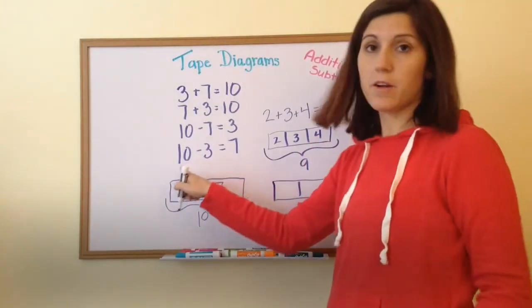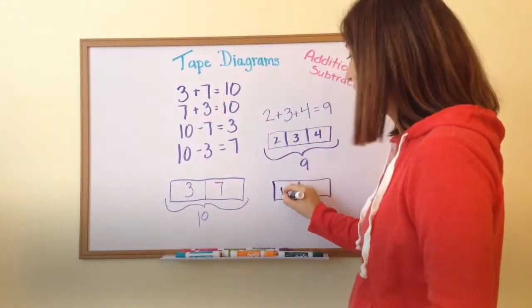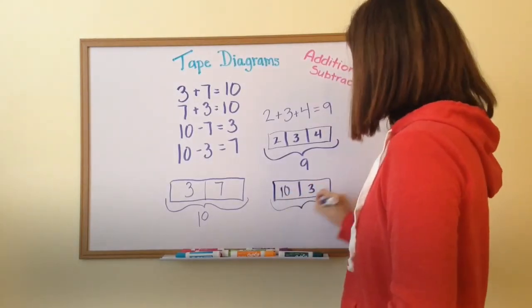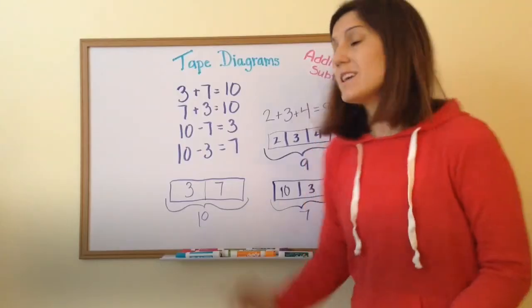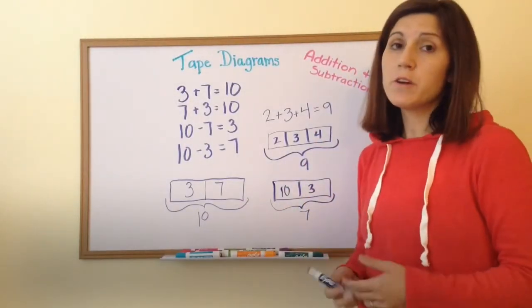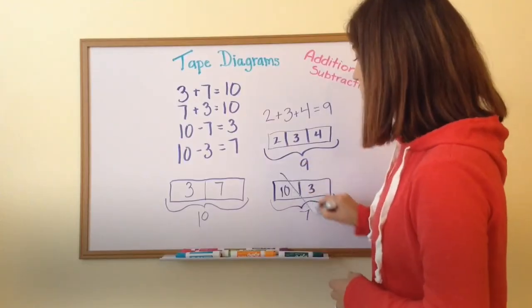Let's say up here that I put ten and three inside my tape diagram and seven down here. Does ten plus three equal seven? No. And so I know I've made a mistake and I need to go back and check my work.